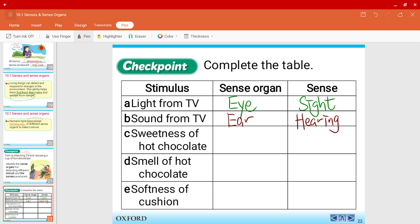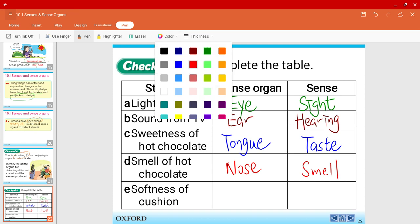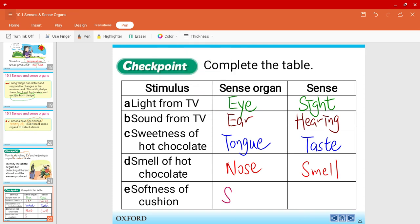Question C, sweetness of the hot chocolate. You're, of course, tasting it. So this would be the tongue. The sense organ is the tongue and the sense is the taste. Next up, the smell of the hot chocolate. The smell would be from your nose, the sense organ. And the sense would be the smell. Finally, question E, the softness of the cushion. This would be your skin because you are sensing or you're touching it. So this would be touch.